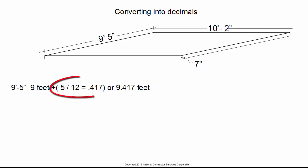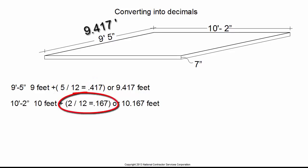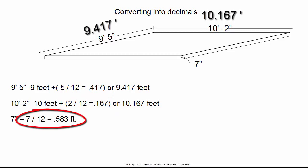Notice 9 feet 5 inches: 5 inches divided by 12 equals 0.417 of a foot. The same for 10 feet 2 inches: 2 inches divided by 12 equals 0.167 of a foot. And 7 inches divided by 12 equals 0.583 of a foot.